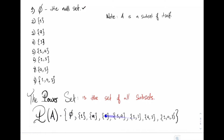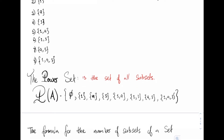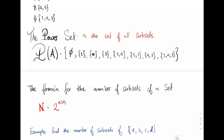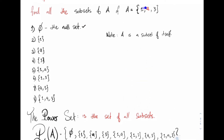By writing down the power set, we can answer this fundamentally important question. The formula for the number of subsets of a set is equal to 2 raised to the power n, where n is the number of elements of the set. Notice that this is the same as the number of elements in the power set of A. In this case, it was 2 raised to the third power because set A had three elements.